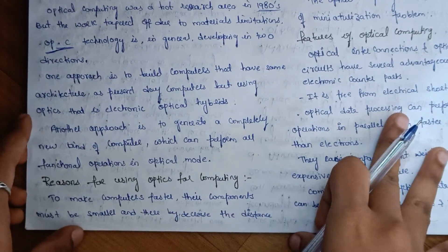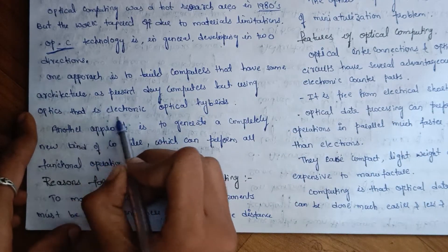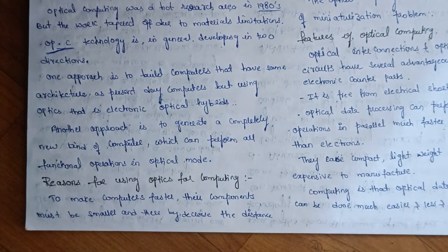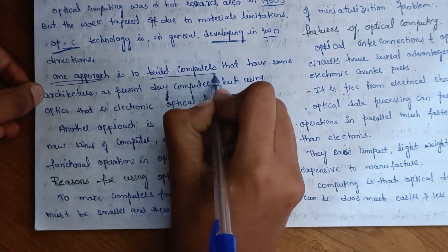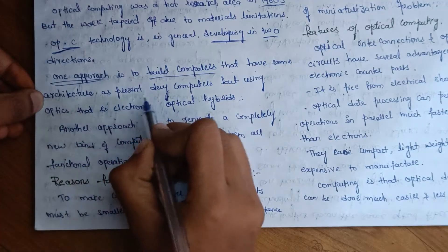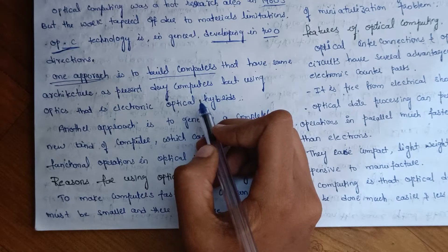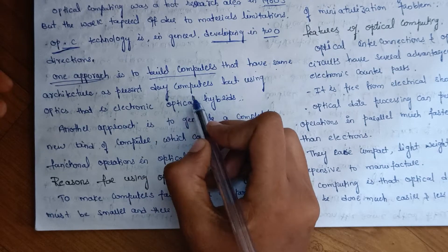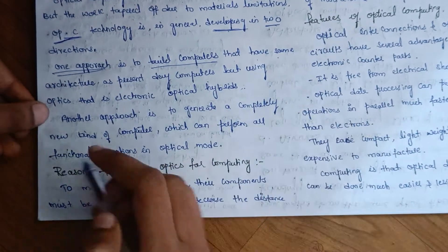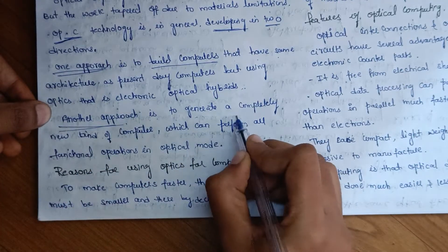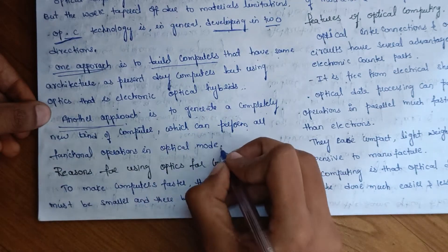One approach is to build computers that have same architecture as present-day computers, but using optics - that is electronic-optical hybrids. First approach is to build computers that have same architecture as present-day computers.